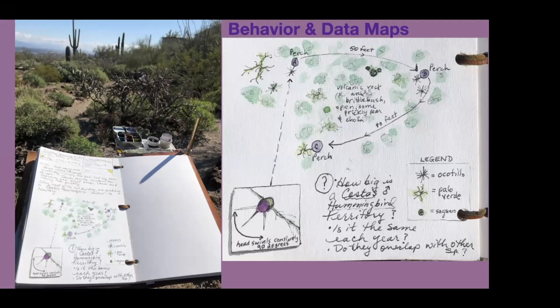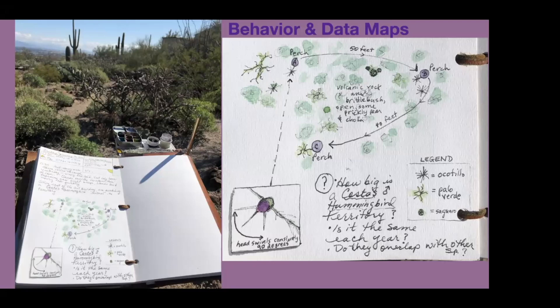I really enjoy doing these behavior and data maps. Here's a good example: I was at my studio at the Desert Laboratory on Tumamoc Hill stepping out for a break and noticed a Costa's hummingbird zipping around in the desert outside. I could have just sketched the hummingbird, but I realized it's more interesting to observe what he's doing — so I decided to map it. Perch A, Perch B, Perch C — representing what kind of tree he was in, was he in an Ocotillo, a Palo Verde tree, and how far apart they were. He kept going around and around this area, zipping from perch to perch, and I noted that as he sat on his perch he would swivel and look all around. This is a way to represent behavior on a map.